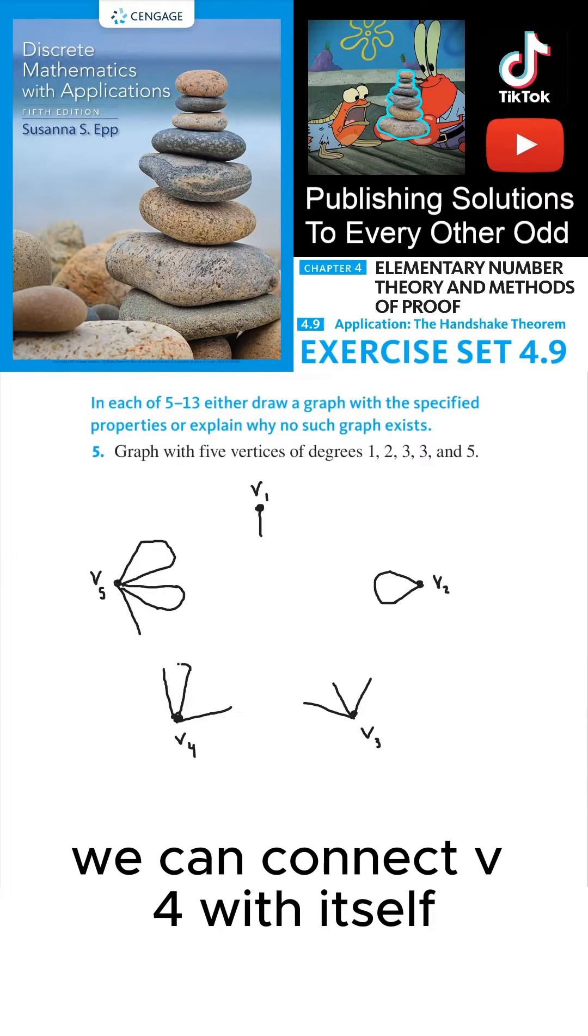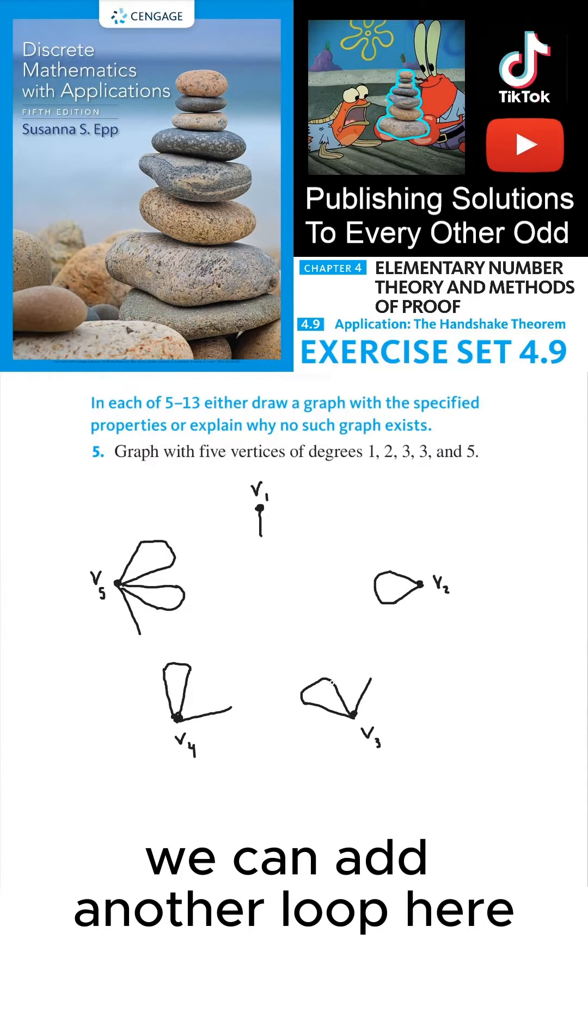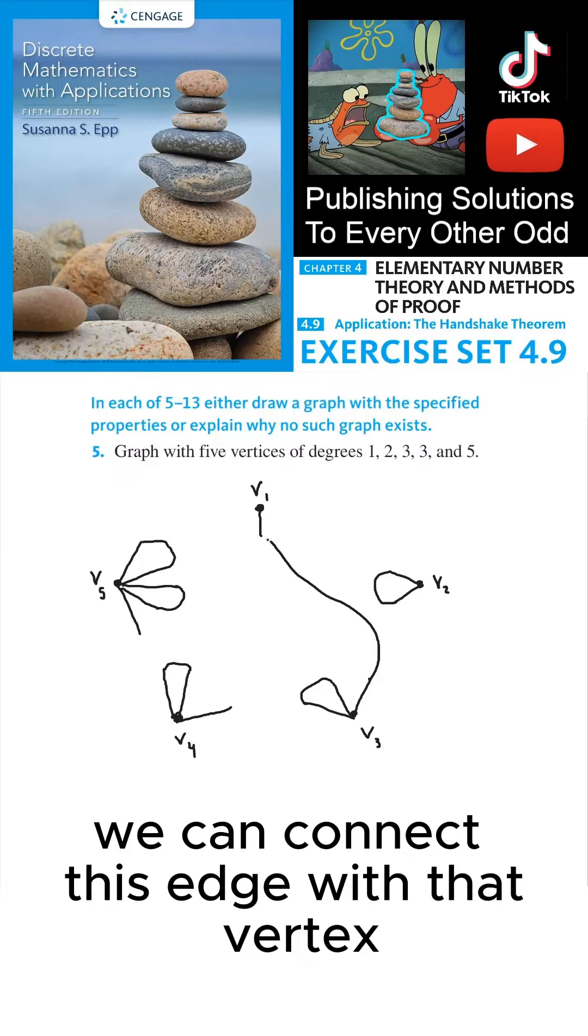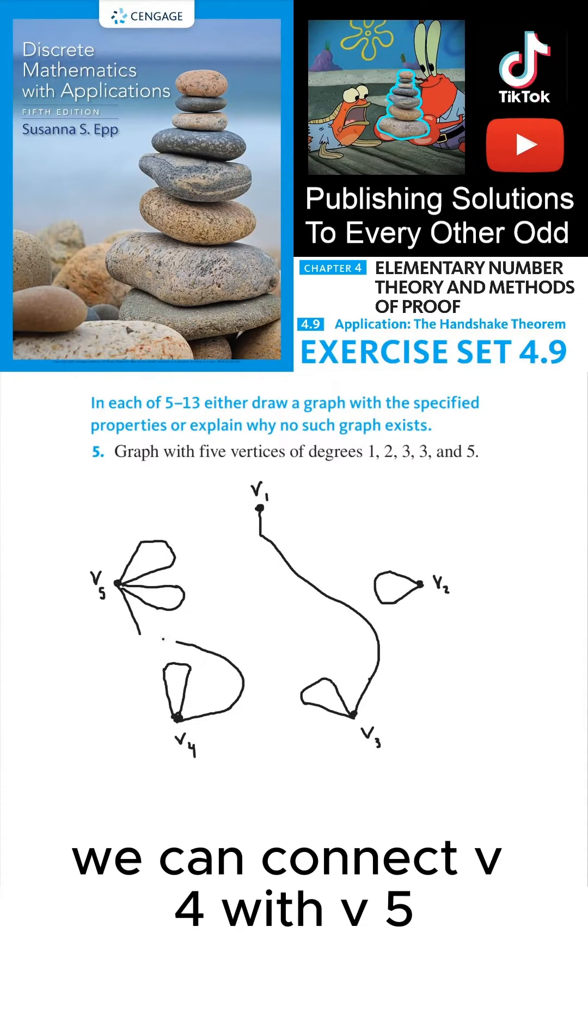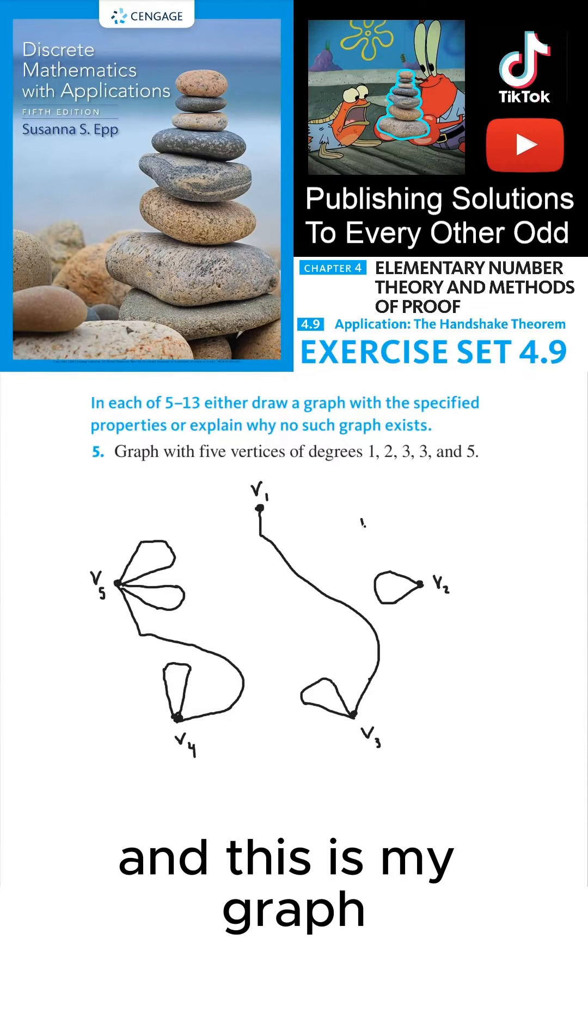We can connect V4 with itself. We can add another loop here. We can connect this edge with that vertex. We can connect V4 with V5. And this is my graph.